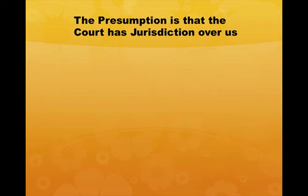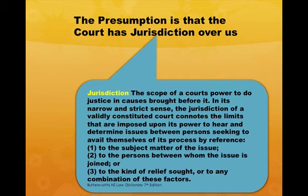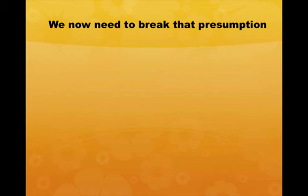There's always a presumption, and this is one of the keys to it. We must break those presumptions that anyone has any power or jurisdiction over us. Jurisdiction is the scope of a court's power to do justice in causes brought before it. In its narrow and strict sense, the jurisdiction of a validly constituted court connotes the limits imposed upon its power to hear and determine issues between persons seeking to avail themselves of its process, by reference to the subject matter of the issue, to the persons between whom the issue is joined, to the kind of relief sought, or to any combination of these factors. So we now need to break that presumption.